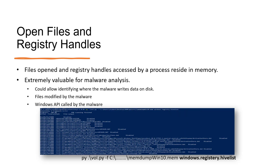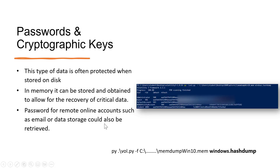Also in RAM you will find open files and registry files. To view registry files using Volatility 3, you can type windows.registry and it will show the registry files present on that machine. There is also a separate plugin available for viewing open files.